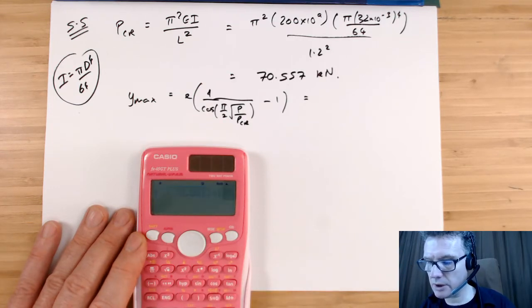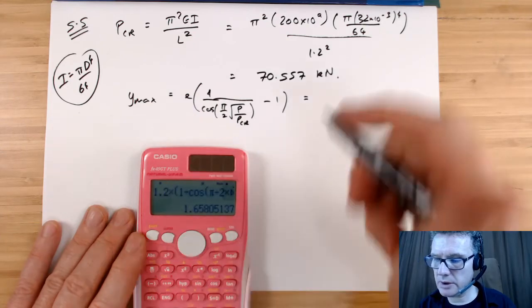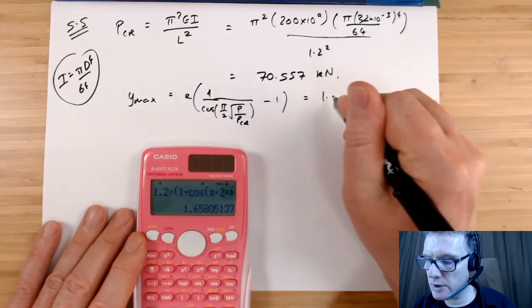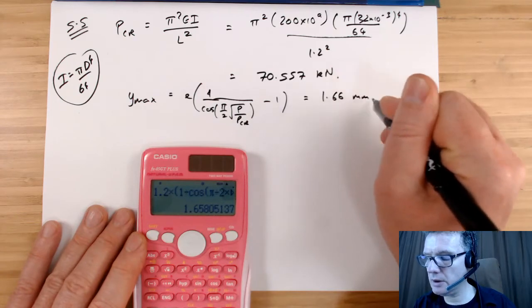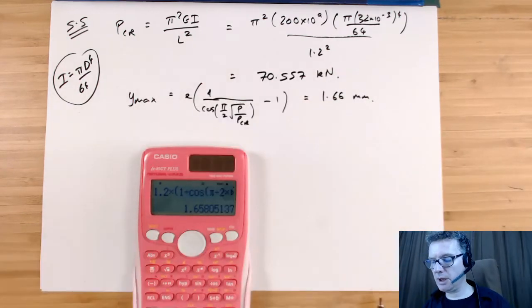And so that then gives me 1.66, and don't forget I've put in my calculator in terms of millimeters, so that'd be in millimeters. So the maximum deflection I expect is 1.66 millimeters.